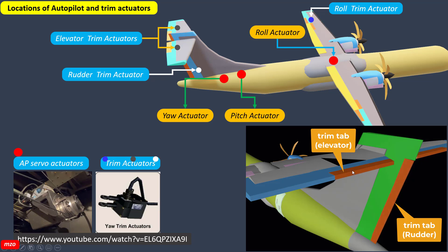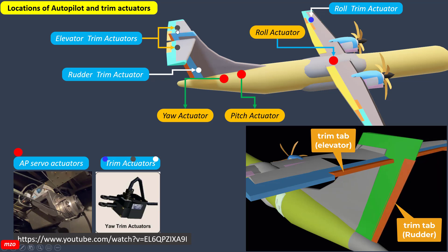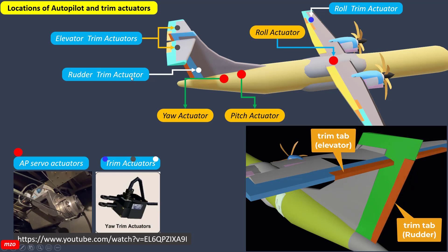This is the elevator trim actuator. We have the left trim actuator and right trim actuator. This is the rudder trim actuator — we have one rudder trim actuator.